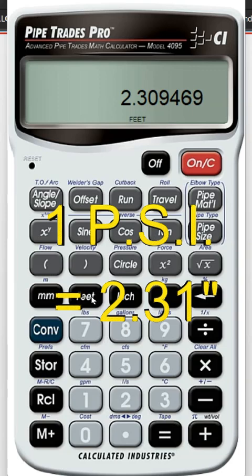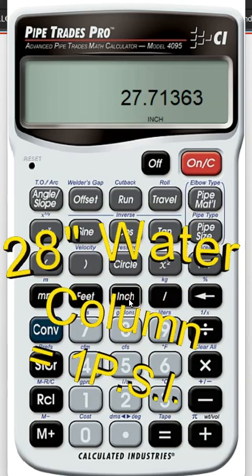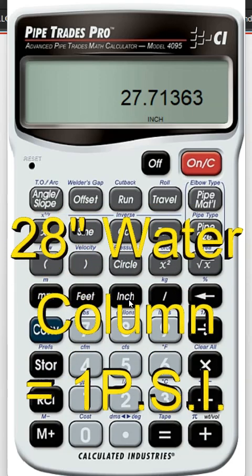So if we take that feet and we convert that to inches, we get 28 linear inches. That's where we get 28 inches of water column equals 1 psi.